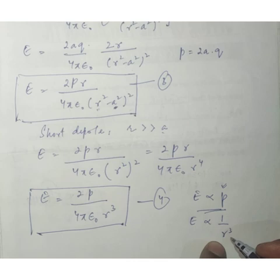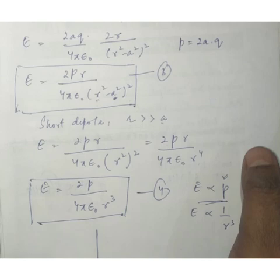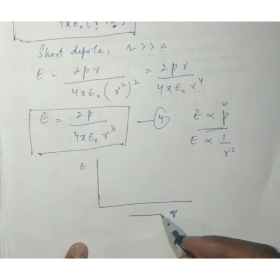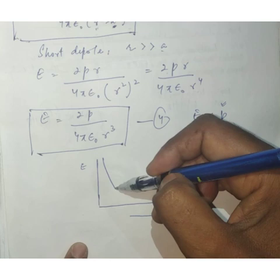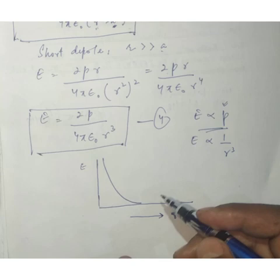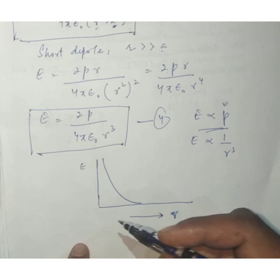If we plot a graph with distance on the x-axis and electric field on the y-axis, as we increase the distance of point P from the center of the dipole, the electric field decreases sharply because it is inversely proportional to r³. So at large distances, the electric field becomes very low very quickly. This concludes the derivation of the electric field on the axial line of a dipole.